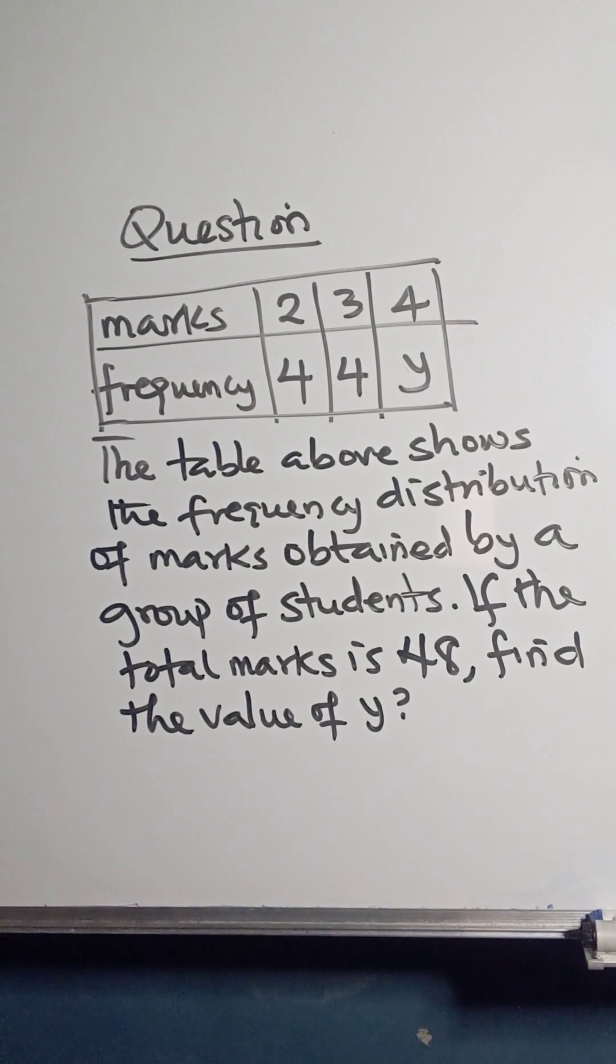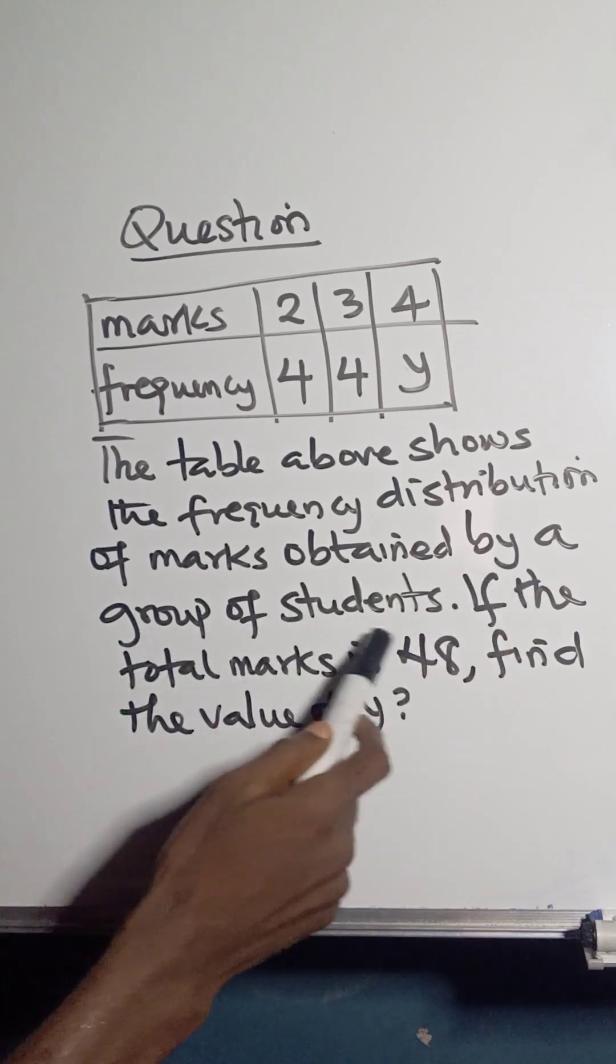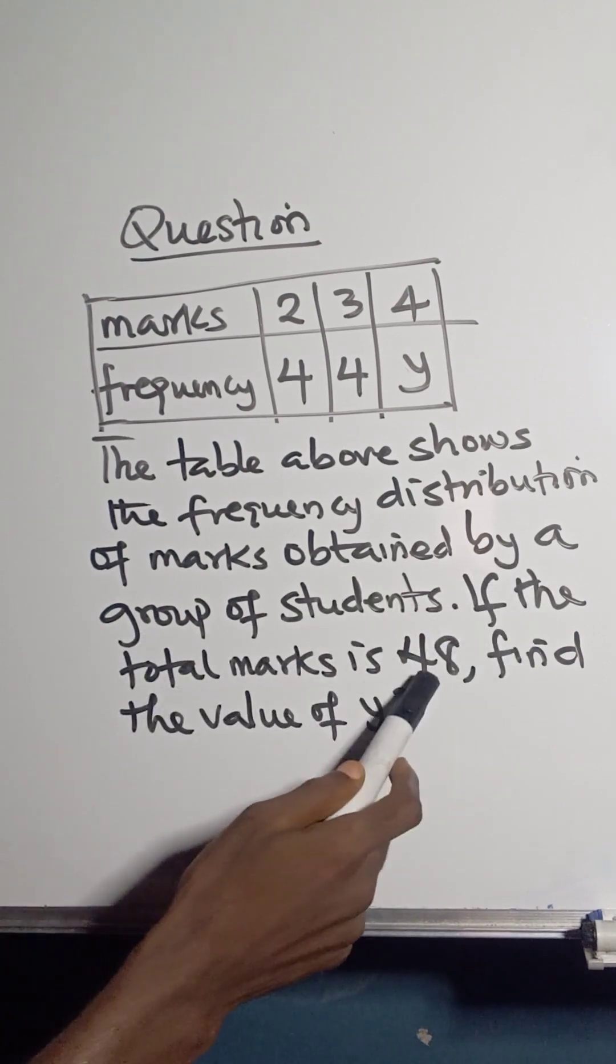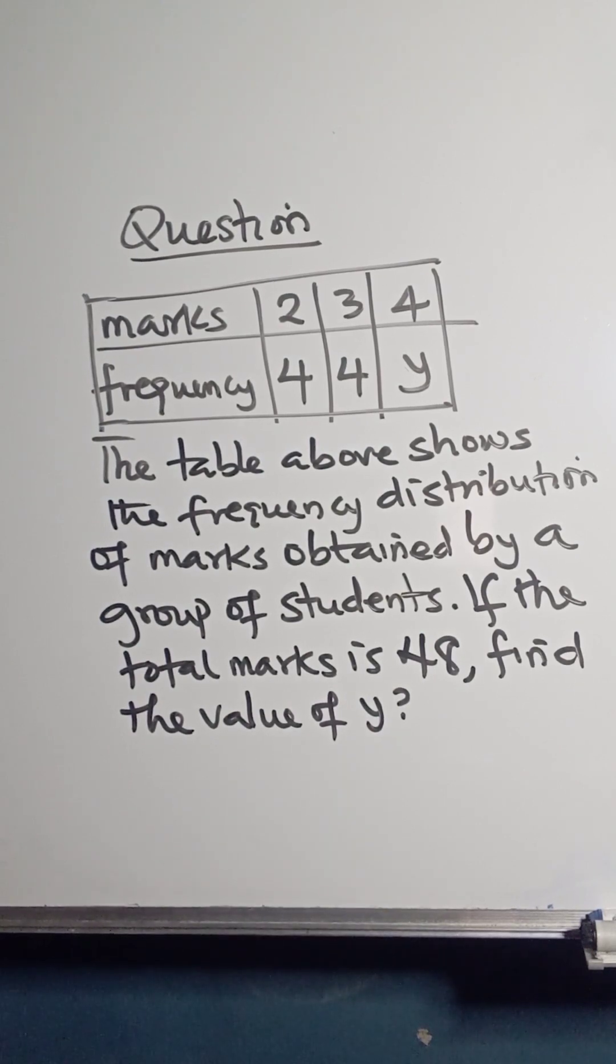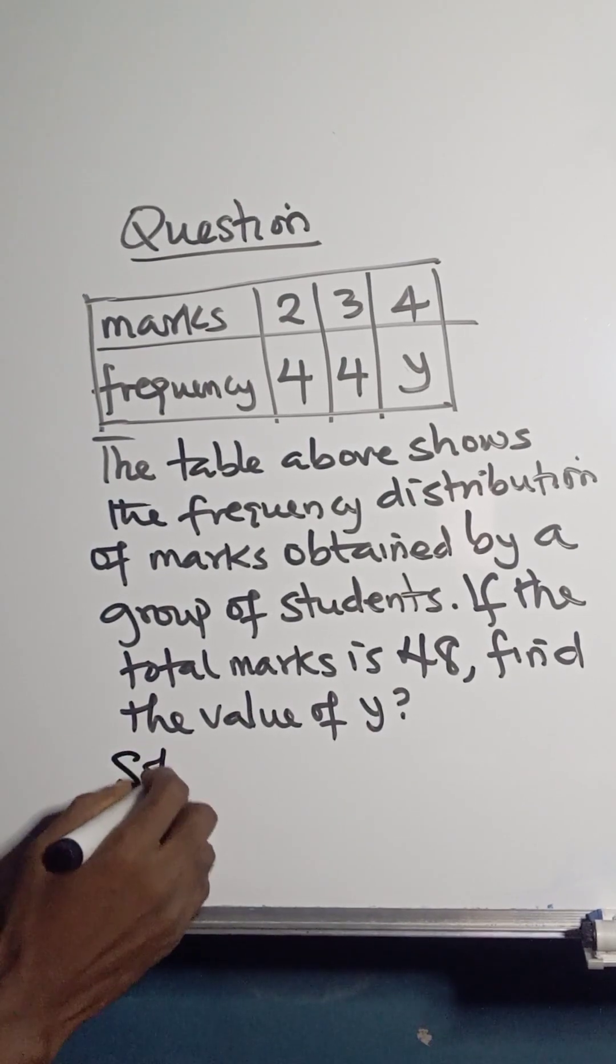The board shows a table where the marks are 2, 3, 4, and the frequencies are 4, 4, and y. The table above shows the frequency distribution of marks obtained by a group of students. If the total marks is 48, find the value of y.